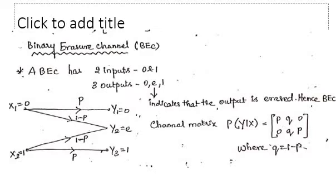Then we will discuss about binary erasure channel, BEC. Basically, in the previous two cases we had two inputs and two outputs. Here in the binary erasure channel, we define it as having two inputs and three outputs. Your input can be zero and output can be zero — that is case one. Second case is input is one and output is one. Another case is if you give input zero or input one, you will get some other error value.